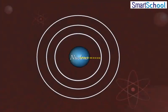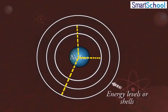These discrete orbits have fixed radii and energy and are called energy levels or shells.